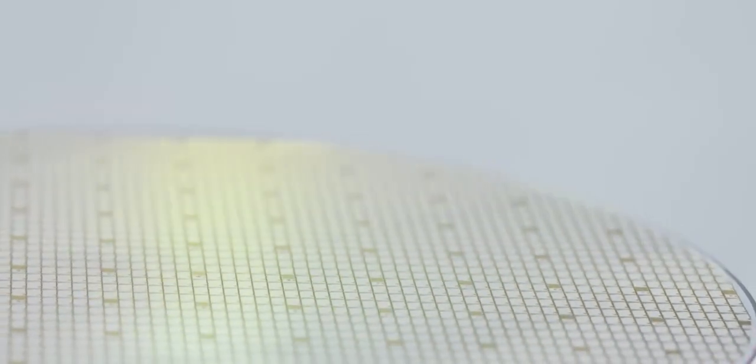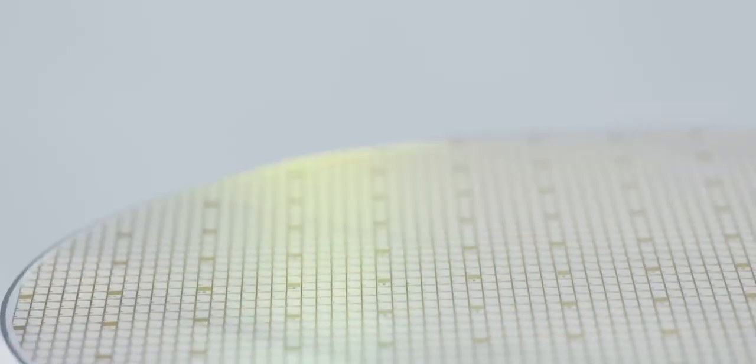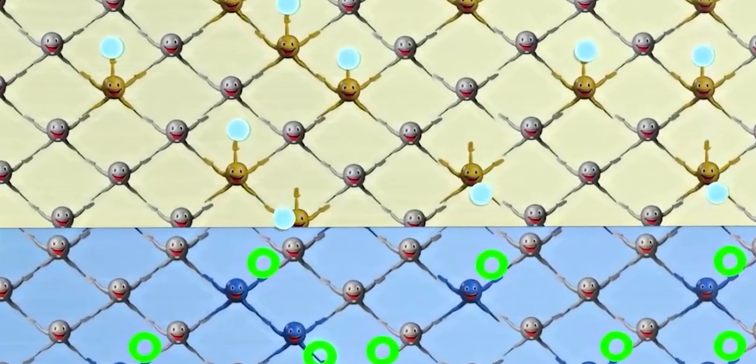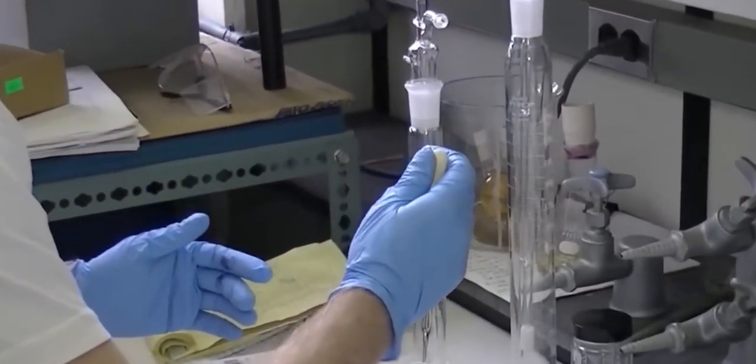Tandem devices can potentially have power conversion efficiencies beyond 33%, which is the theoretical cap of a single junction PV cell thanks to the use of multiple PV materials.